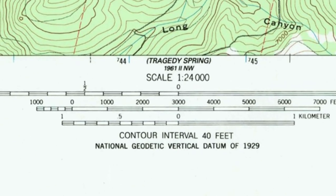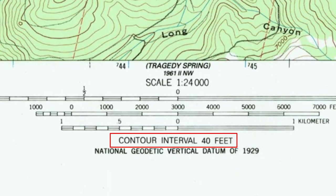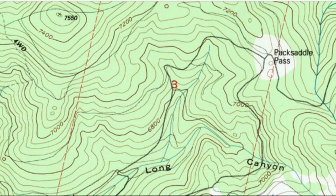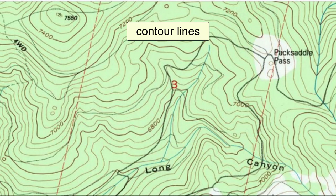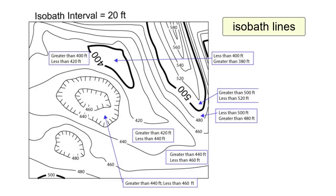Now let's return to the scale bar. Just underneath, we can read the contour interval for this map: 40 feet. Throughout the map we find brown lines called contour lines, which connect points of equal elevation above sea level. Each line is 40 feet higher or lower than the one next to it, and the numbers get higher as we move up peaks. Other maps called nautical charts have lines called isobaths that connect points of equal depth below sea level, where numbers get bigger as we go deeper.